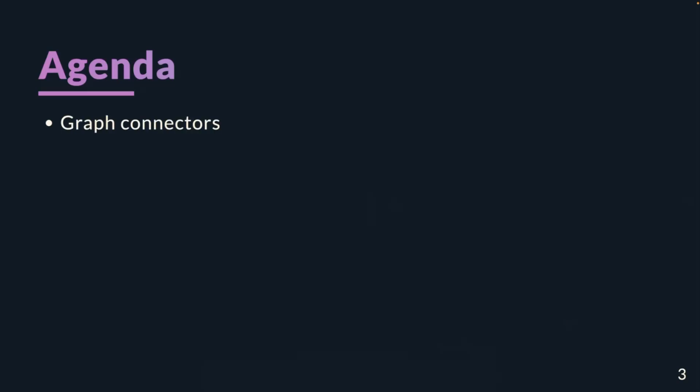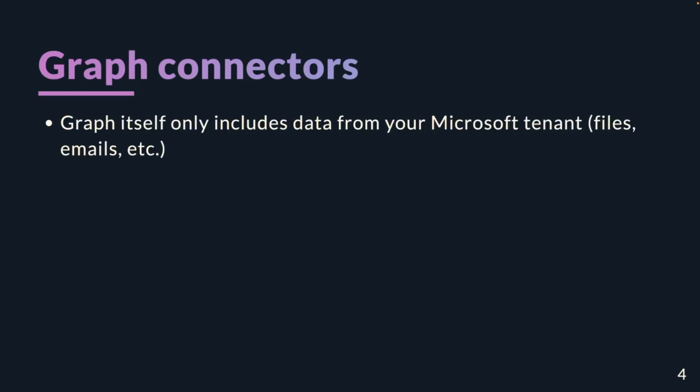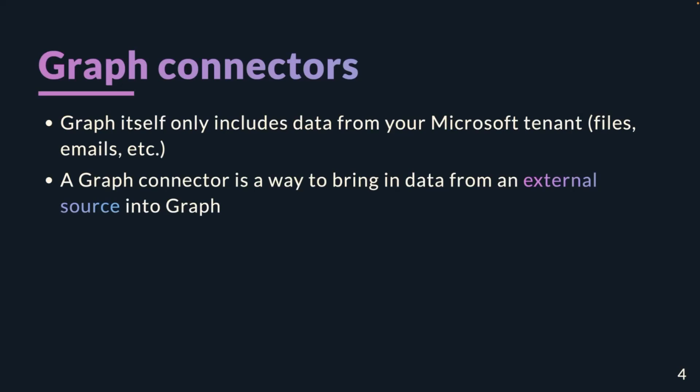A quick 101 on Graph Connectors. Microsoft Graph itself only has data based on your own files, emails, calendar — those sorts of things. That's your base ground data in Microsoft Graph. If you want to bring in external data from external data sources, you need to use a different method. One way is to use Graph Connectors — you can also use things like API plugins, but that's for another day. So we're going to talk about bringing external data into Graph so it sits alongside things like your emails.